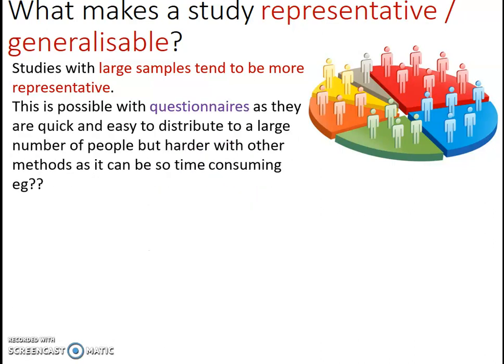A very representative method is questionnaires — they are quick and easy to distribute, mainly by email or Google form, so you can get them to a large number of people. For other methods, it's more difficult to be representative because they are time consuming. Interviews are time consuming — even structured ones, you still have to sit down with a person and go through questions, which takes time for both researcher and participant.